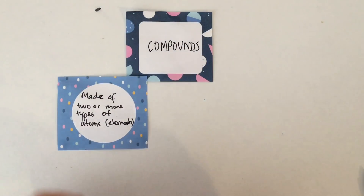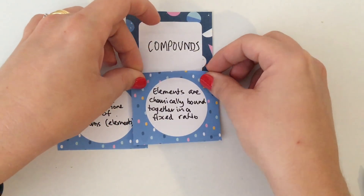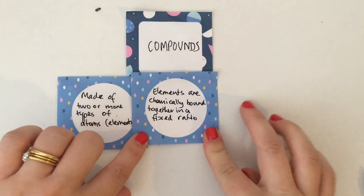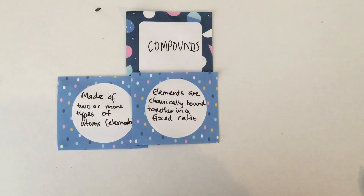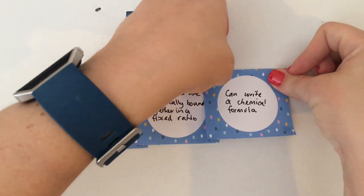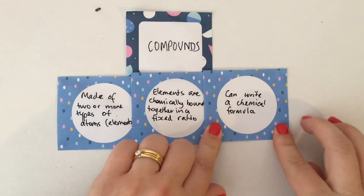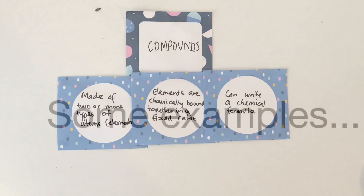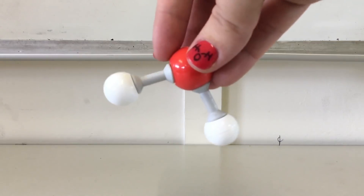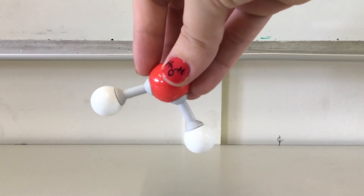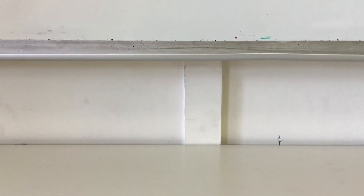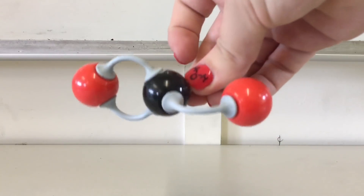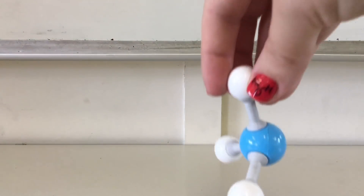Compounds are pure substances that are made up of two or more types of elements. Those elements are chemically bound together in a fixed ratio, and this fixed ratio means that we can write a chemical formula for compounds. Some examples: here we have water, which is made up of hydrogen and oxygen, and here we have carbon dioxide, which is made up of carbon and oxygen.